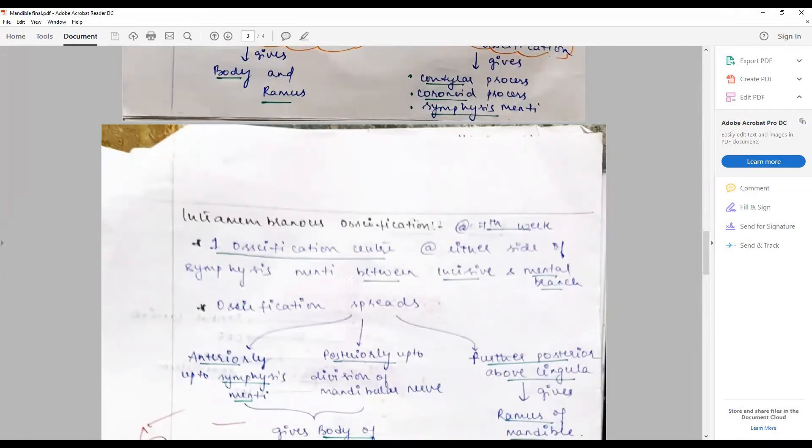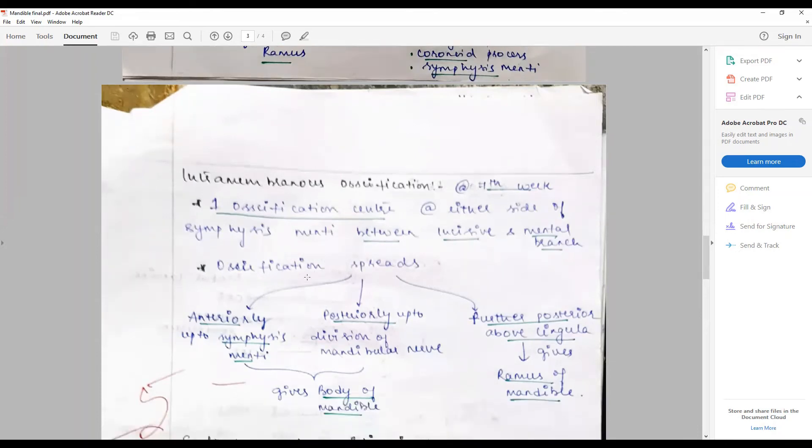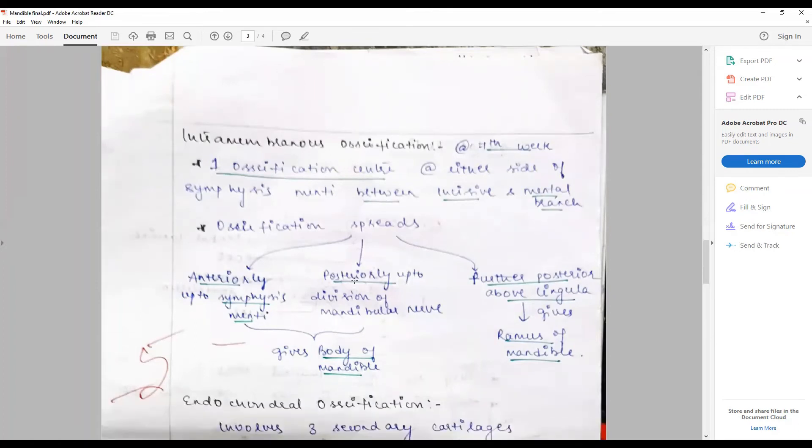The ossification spreads anteriorly up to the symphysis menti, posteriorly up to the division of mandibular nerve, and this together contributes a major part of the body below the mandible. Whereas further posterior, up to the area of lingula, gives rise to the ramus of the bone.